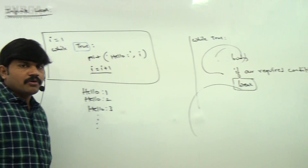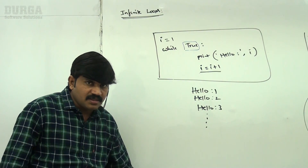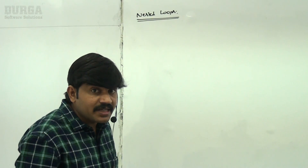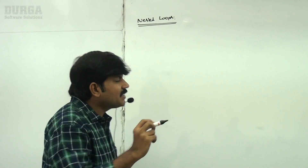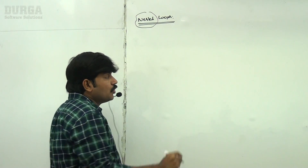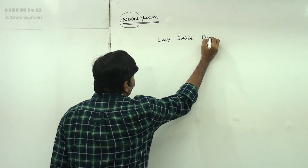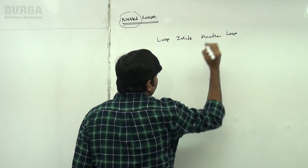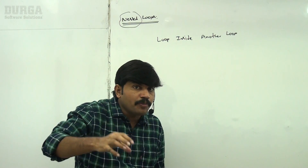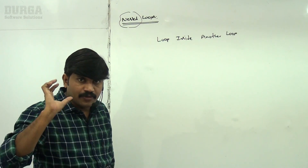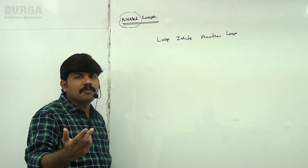So what is an infinite loop? That's now clear. The next small concept is nested loops. What is the meaning of nested loop? The name itself indicates — loop inside another loop. Sometimes we can declare a loop inside another loop; such a concept is called nested loops or inner loops.